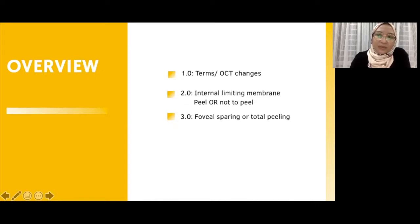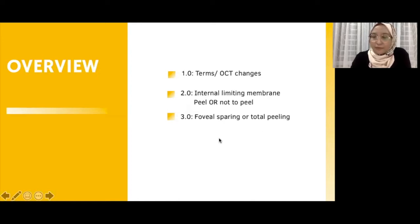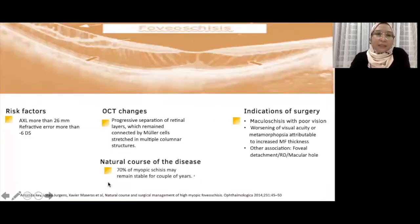I will start with recapping on the common terms for the OCT description of myopic schisis, and also highlight the issues of whether we should peel the ILM or not peel the ILM for such cases. Lastly, I will make a comparison between the two types of peeling — whether we should spare the fovea or have a complete peeling of the internal limiting membrane.